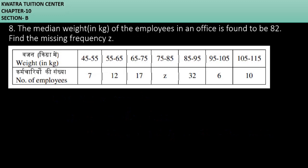Let's start with question number 8. It says the median weight of the employees in an office is found to be 82. Find the missing frequency Z. We have to find Z. We have the weight and the number of employees, which is basically our frequency.